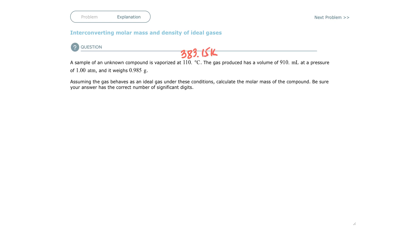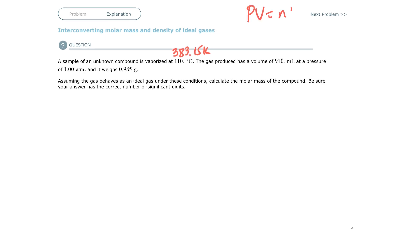It produces a volume of 910 milliliters. This is ideal gas, so we're using ideal gas law. If you remember, the ideal gas law is PV equals nRT. If P is in atmospheres, then R is in liter atmospheres over Kelvin moles, which means it has to be in Kelvin, in moles, and in liters.